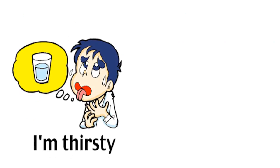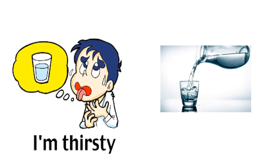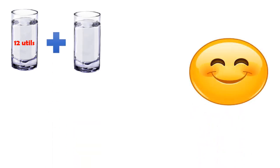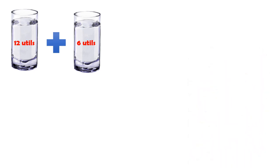Suppose a person is feeling extremely thirsty and he needs water. The first glass of water will give him a lot of satisfaction and he will derive a good amount of utility — suppose he derives 12 utils from the first glass. When he drinks the second glass, his thirst is already reduced, so he will derive less utility from the second glass — suppose he derives 6 utils.